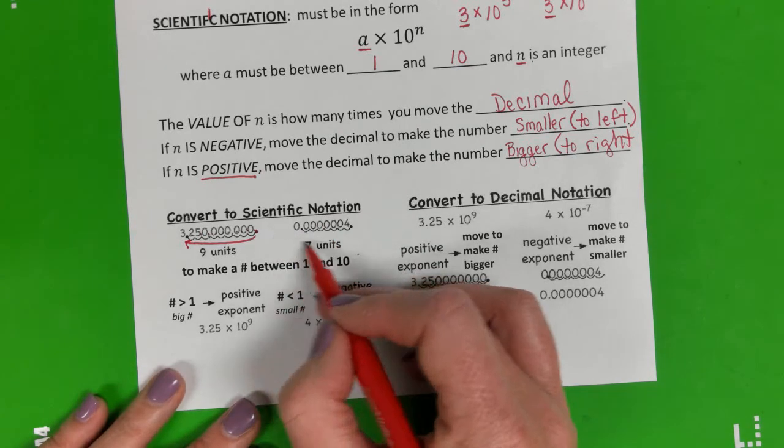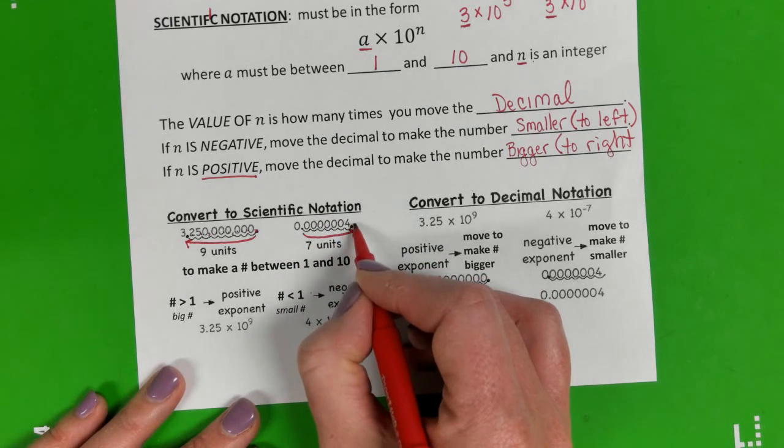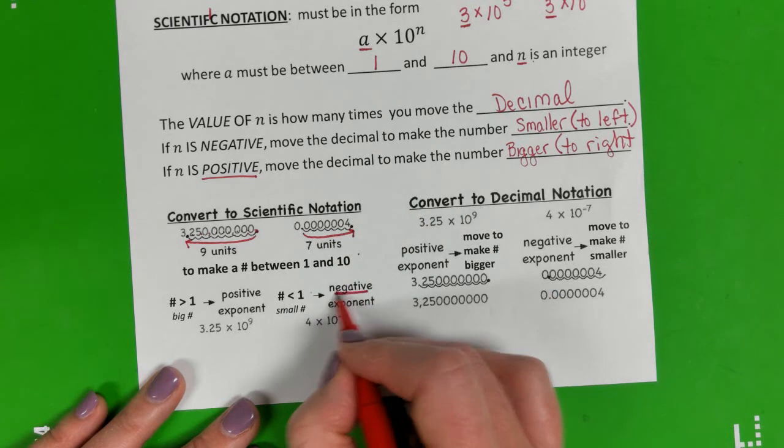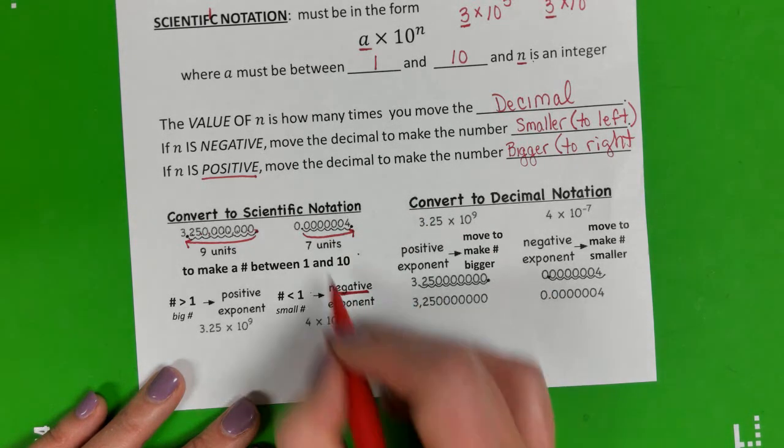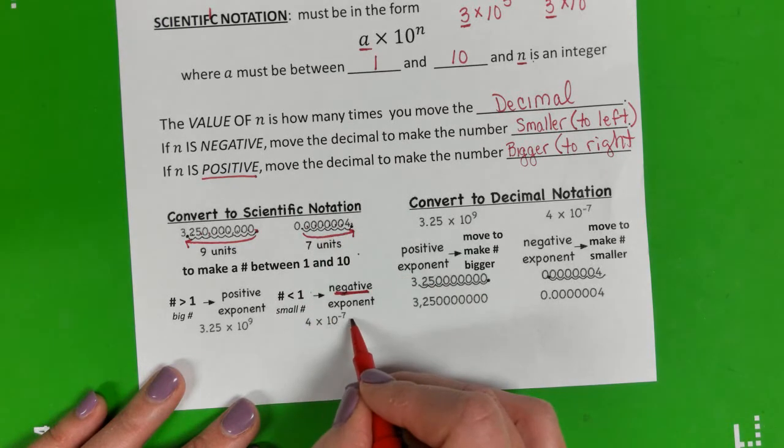If our number is a decimal to begin with, we're moving it all the way back here behind the 4, and that means we should have a negative exponent: 1, 2, 3, 4, 5, 6, 7. Negative 7.